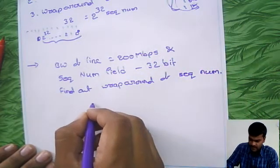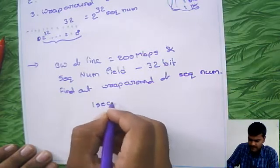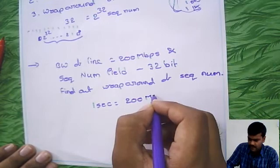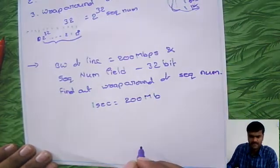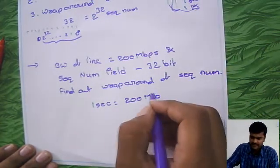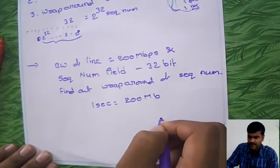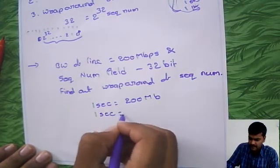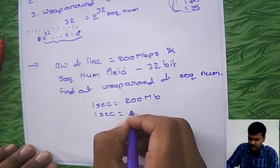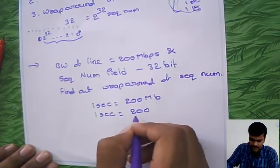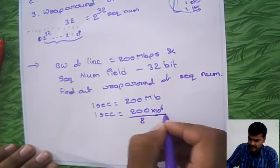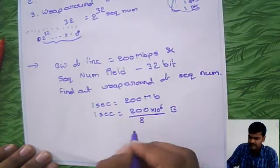By using this bandwidth, if you see, for one second it is transmitting 200 Mbps. Now, if you convert this one in terms of bytes, this is in terms of bits. So simply 200 by 8 into 10 rise to 6 bytes it is taken.